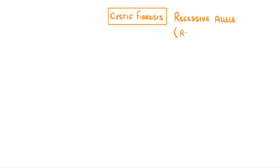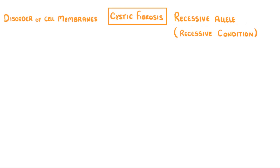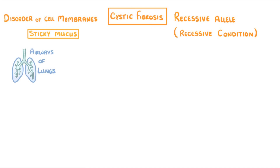Cystic fibrosis, on the other hand, is caused by a recessive allele, and so you could say that it's a recessive condition. How it works is a bit complicated, but basically it's a disorder of the cell membranes and it results in lots of thick sticky mucus being released in different parts of the body, in particular the airways of the lungs and in the pancreas.